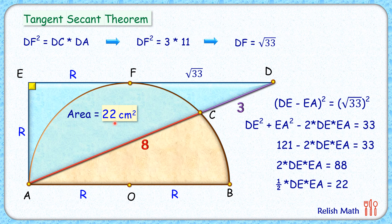And thus area of the blue triangle is 22 centimeter square, and that's our answer. I hope you enjoyed the solution. I will see you in the next video. Till then, bye bye.